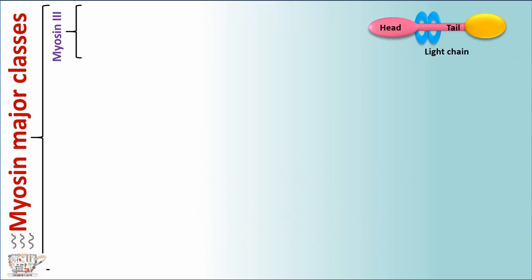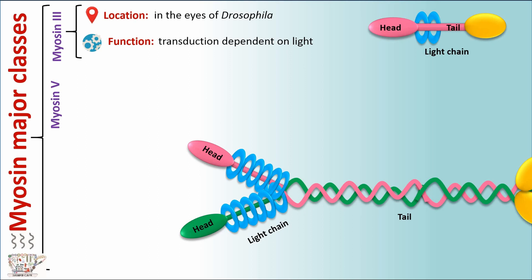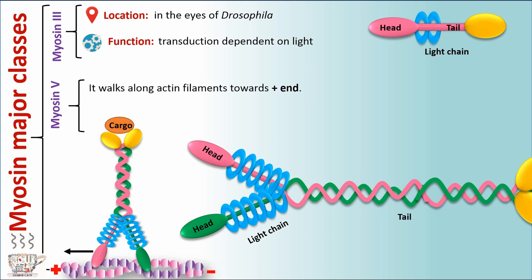Myosin 3 is located in the eyes of drosophila and plays a role in transduction dependent on light. Myosin 5 walks along actin filaments toward plus end and plays a role in transport of cargo.